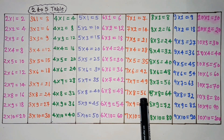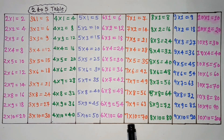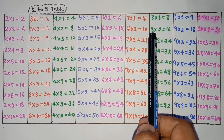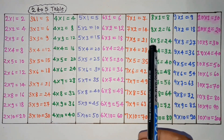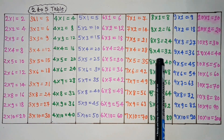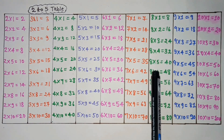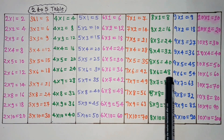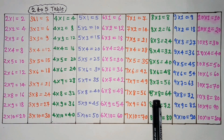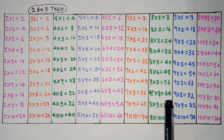7 eights are 56. 7 nines are 63. 7 tens are 70. 8 ones are 8. 8 twos are 16. 8 threes are 24. 8 fours are 32. 8 fives are 40. 8 sixes are 48. 8 sevens are 56. 8 eights are 64.